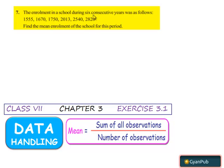Now question number 7. The enrollment in a school during 6 consecutive years was as follows. Find the mean enrollment of the school for this period.